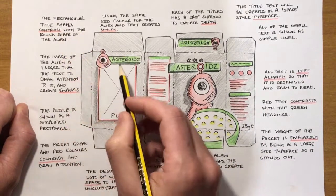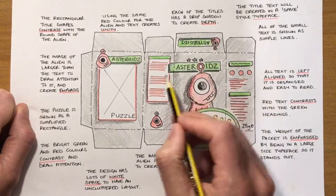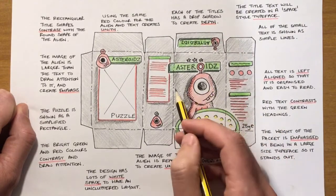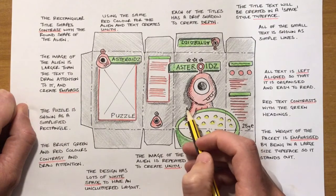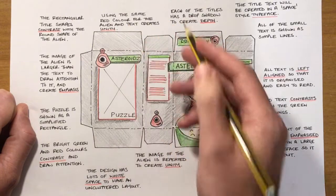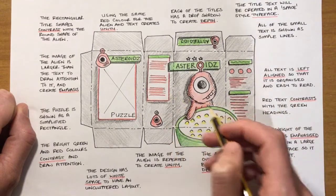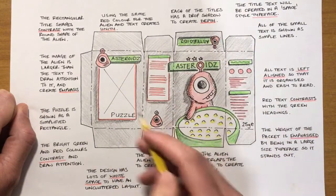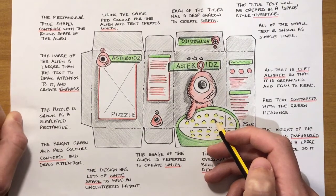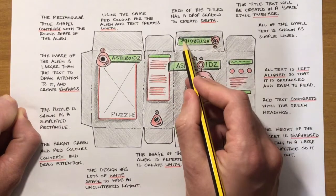The rectangular title shapes — those rectangular boxes all the way around — are designed to create contrast because they're quite straight, organized, and geometric, whereas my alien is more curved and round, so it's a different type of contrast. I've also talked about using the same red color for the alien and the text to create unity — by repeating that red color throughout, it creates unity. I've tried to limit the amount of color so it's still attractive but not overwhelming and easy to follow.